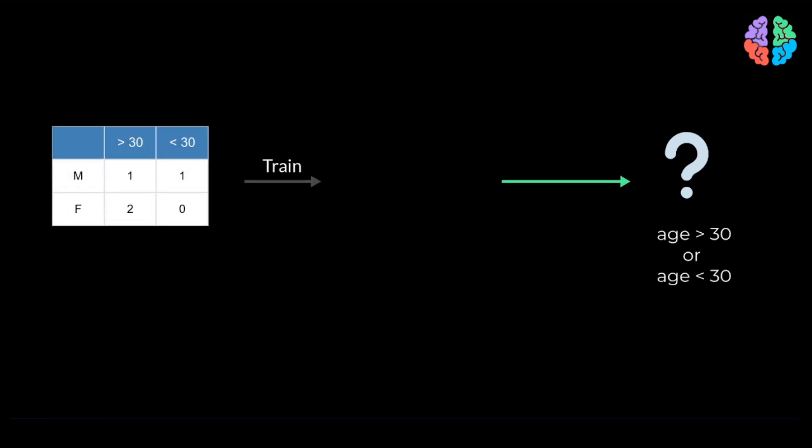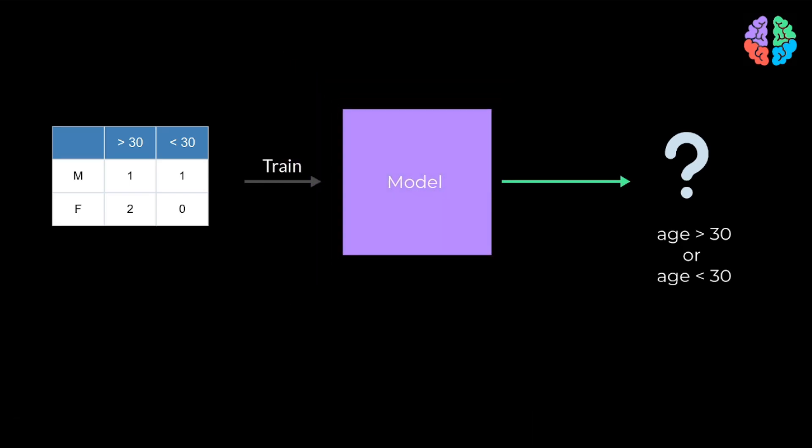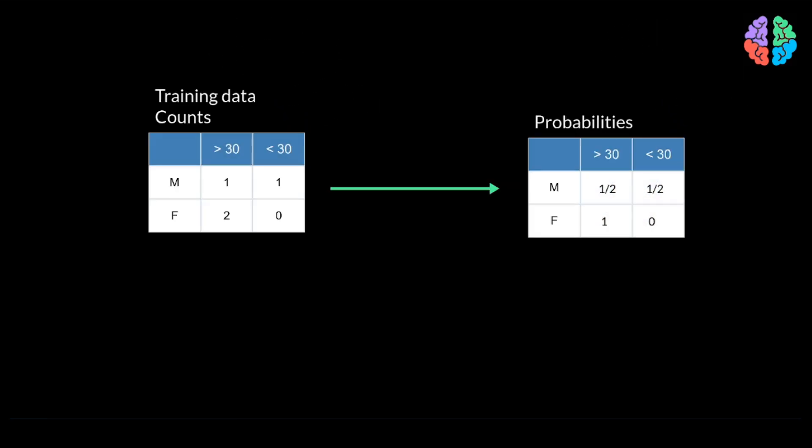Let's say we have trained a model with this dataset. During prediction, whenever we get a female as input, the model will predict the age of the person is more than 30. To dive into the reason, let's have a look at our training data and convert the counts into probabilities.